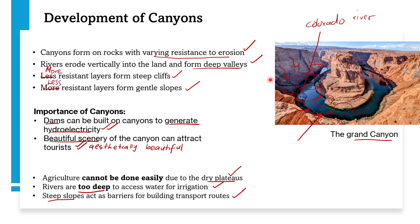The steep slopes in canyon landscapes also act as barriers to building transport roads. Since more resistant rocks form steep cliffs, the gradient is very steep — you could easily fall. Building roads on such steep slopes is extremely difficult, which is why there are no roads around the Grand Canyon. The steep slopes make road construction impractical.